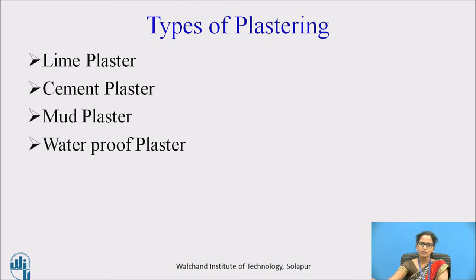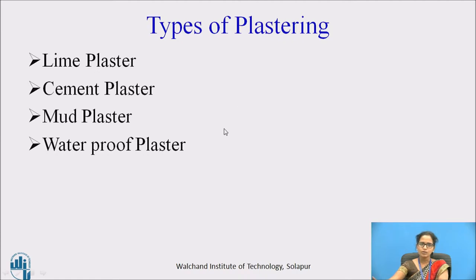Before applying the final coat of cement, the previous coat which is applied should almost be dry. In plastering, the plaster is put on the wall by throwing it with full force, or it may be applied by pressing it on the surface of the wall. The various types of plastering are: first, lime plaster; second, cement plaster; third, mud plaster; and fourth, waterproof plaster or stucco plaster.